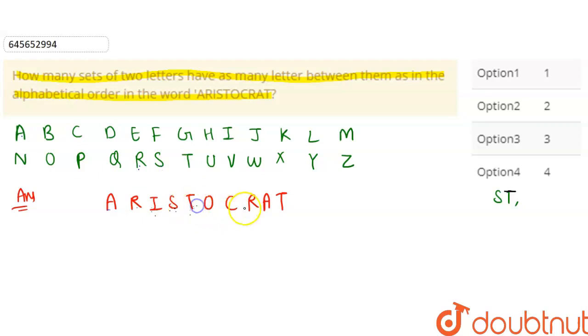T and C — this is not matching. Then T and R — between T and R in the word: how many — two — but here there is A, so not matching. Then check T and E — this is also not matching. And T-T is also not matching.